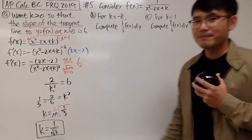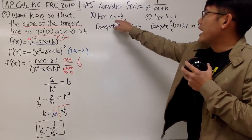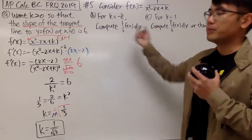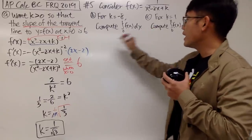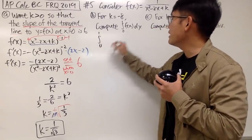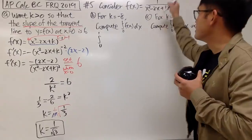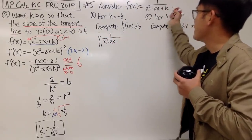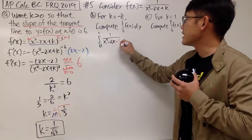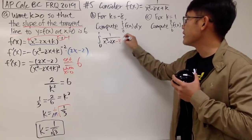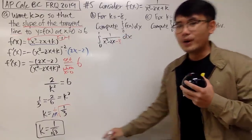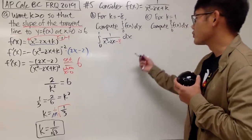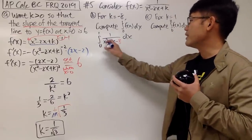Moving on to the next one. Given k is negative 8, we just put it in and then compute the integral. So we are looking at the integral from 0 to 1 of 1 over x squared minus 2x minus 8, dx. We have to integrate this guy, so we do our usual partial fractions, and to do that we have to factor the denominator.